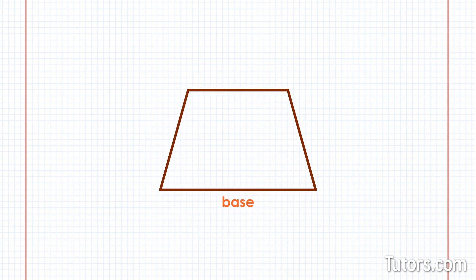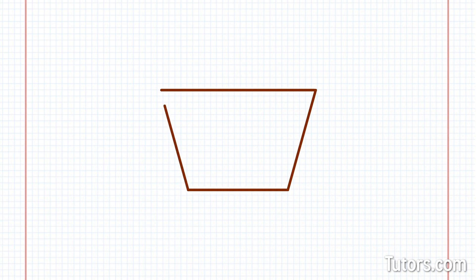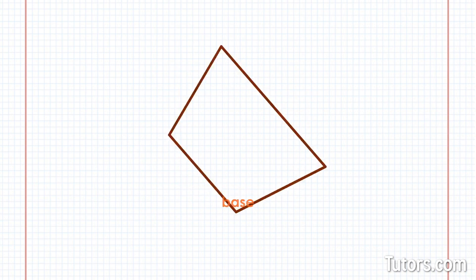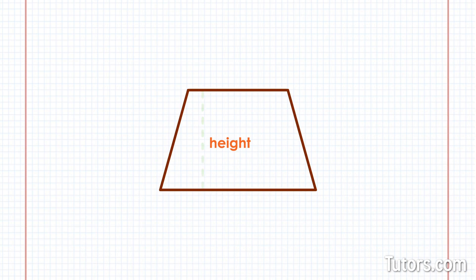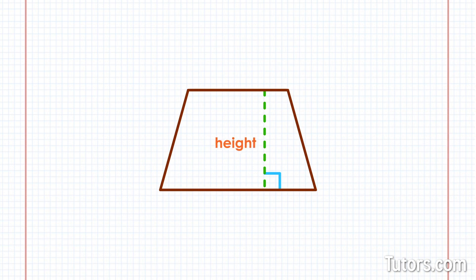The base is usually the longer parallel side, but if the trapezoid is drawn with the shorter parallel side at the bottom, then it is the base. The altitude of a trapezoid is its height. Do not be fooled by the sloping legs — if they slope, they are longer than the height. Altitude is always measured from the base, either parallel side, to the other side at a right angle to the base. You can draw a perpendicular line anywhere along the base of the trapezoid, and when it touches the opposite parallel side, its length is the altitude.